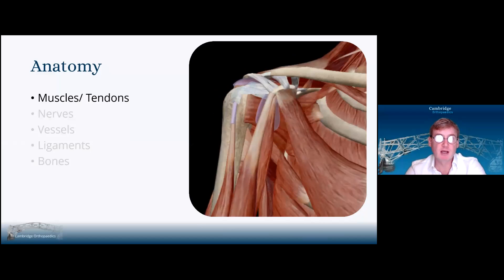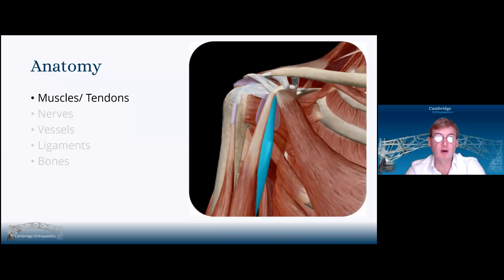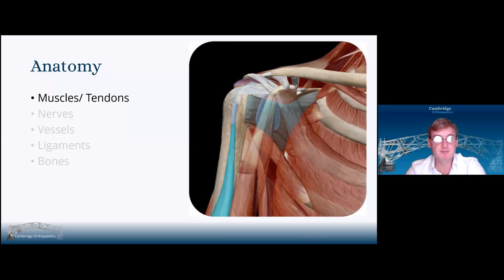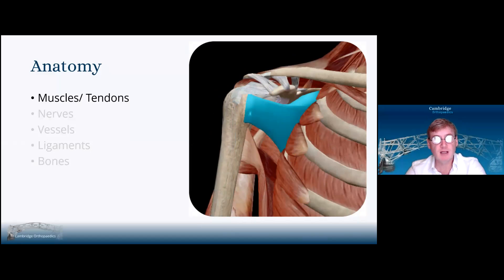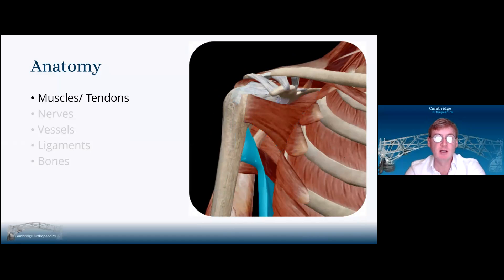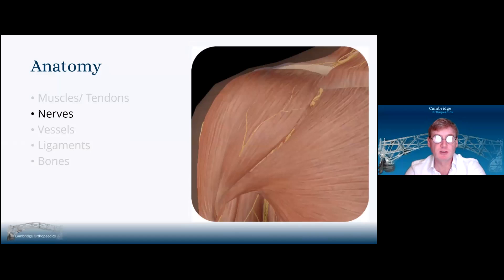Deep to that, we've got the minor coracobrachialis, the short head of biceps, and the long head of biceps. Subscapularis sweeps anteriorly to attach onto the lesser tuberosity, and below that we've got the insertion of latissimus dorsi.